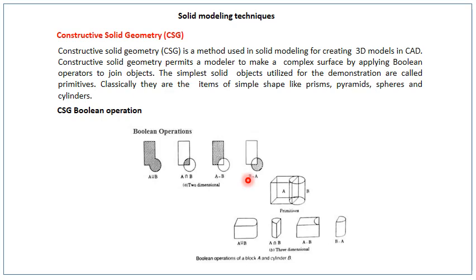The simplest solid objects used for demonstration are called primitives. In the previous examples we saw square, cylinder, torus, wedge, etc. — those are primitives. These primitives are formed by basic shapes using operations like extrude, revolve, loft, and sweep. Classically they are items of simple shape like prisms, spheres and cylinders.